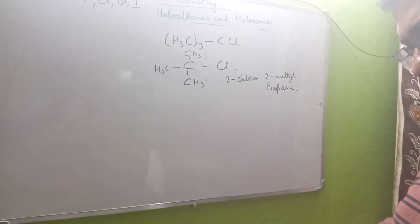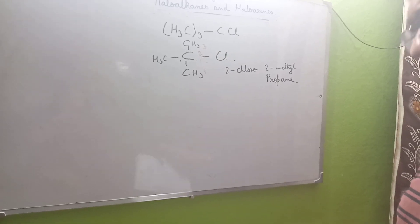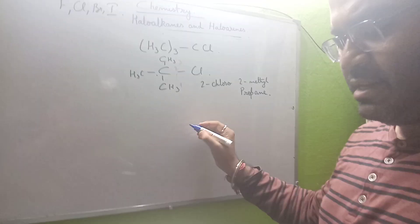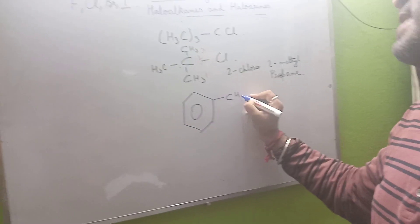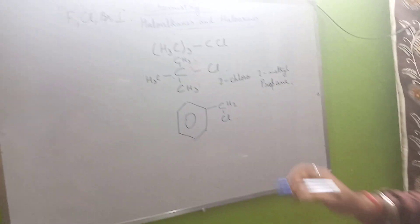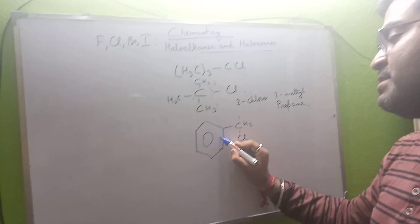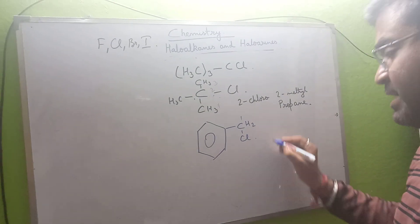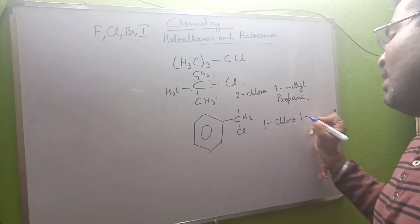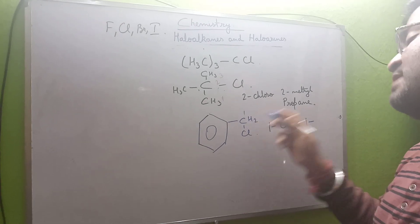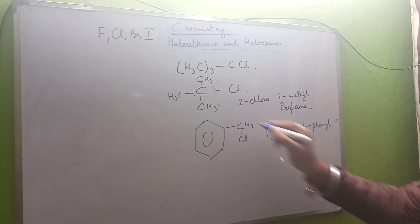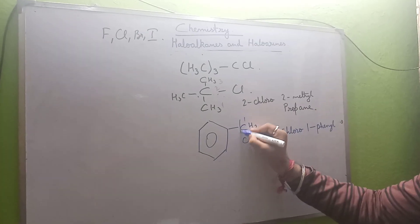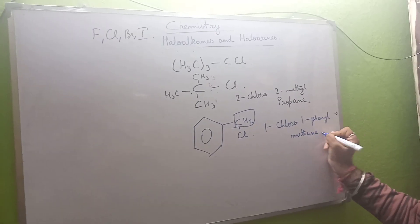The next part is how to do the naming of certain structures like those given in the NCERT book. There is a structure where CH₂Cl is given — this is the only carbon attached to a benzene ring and also having a halogen atom. The chlorine is the functional group and gets priority as number one, and the benzene ring attached to this type of structure is called benzylic, so we call it phenyl.